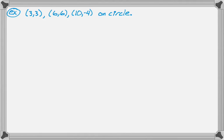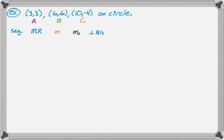Here's an example. We have the point A(3,3), the point B(6,6), and the point C(10,−4), and those are all on the circle. We need to find the perpendicular bisectors of the segments connecting them. I'll set up a table with columns for: the segment, the midpoint of the segment, the slope of the segment, the perpendicular slope, and the equation of the perpendicular bisector — which uses the midpoint and the perpendicular slope.